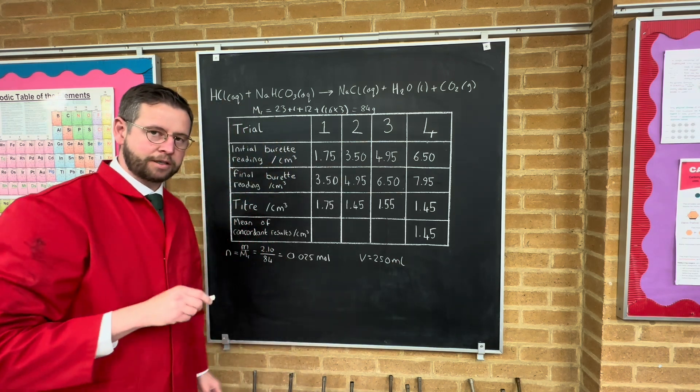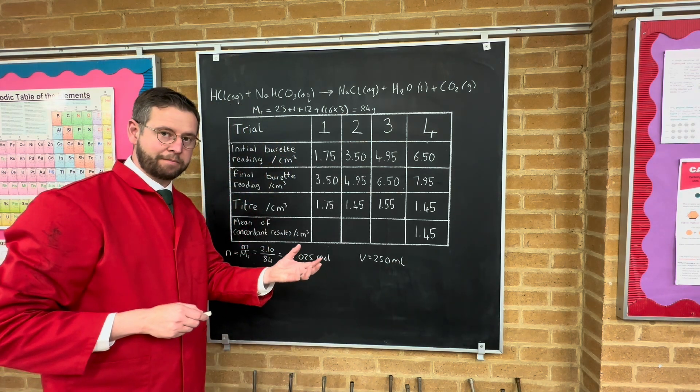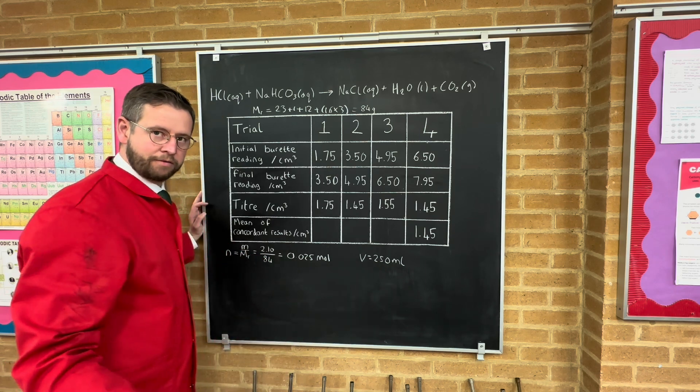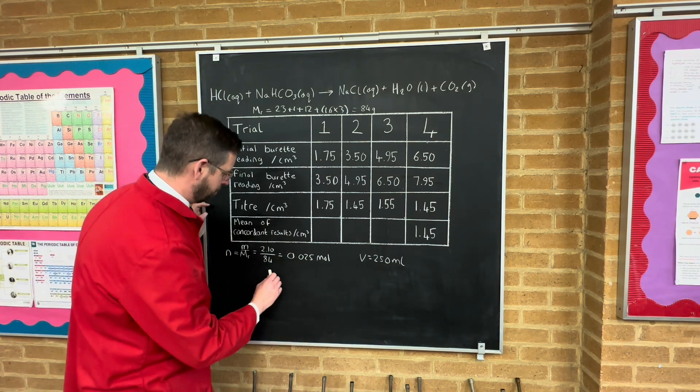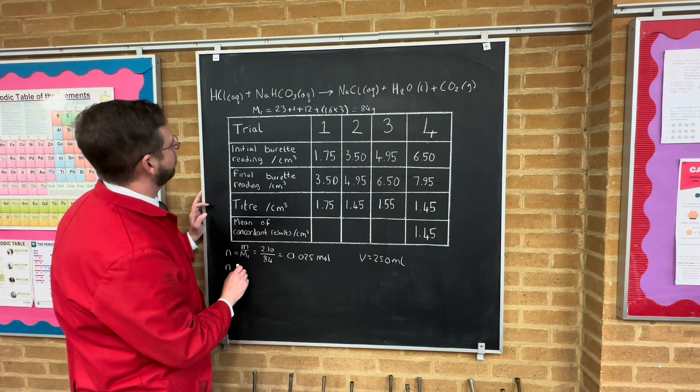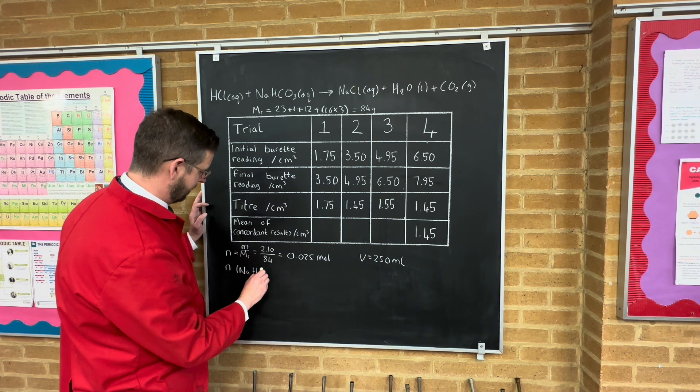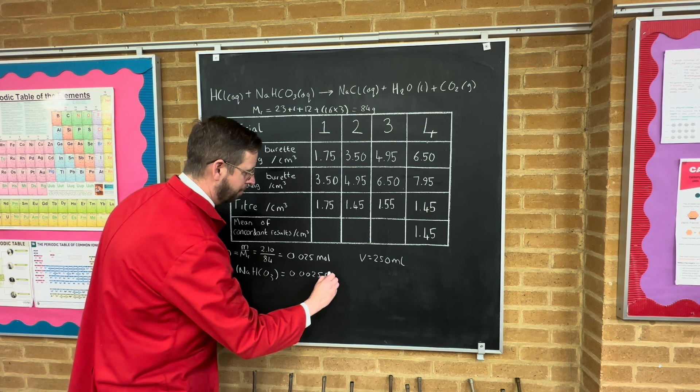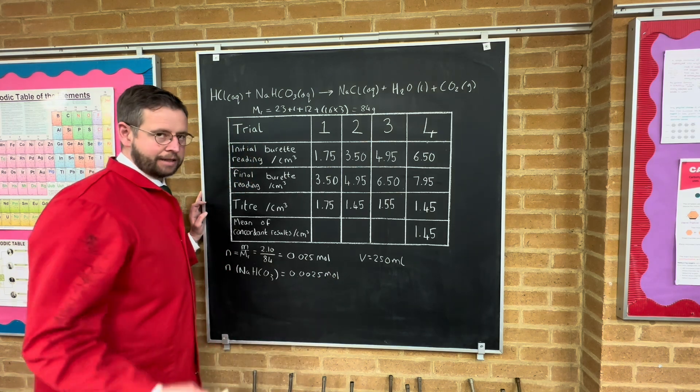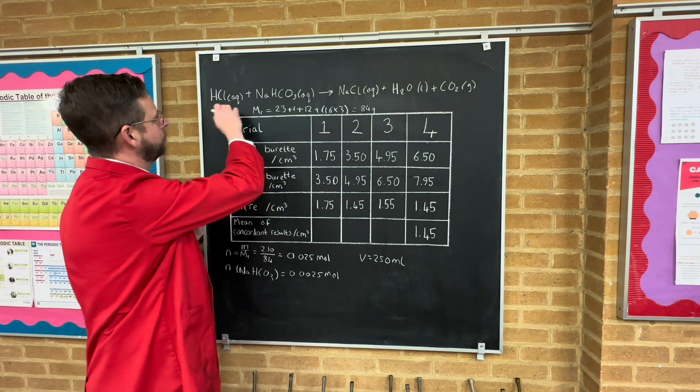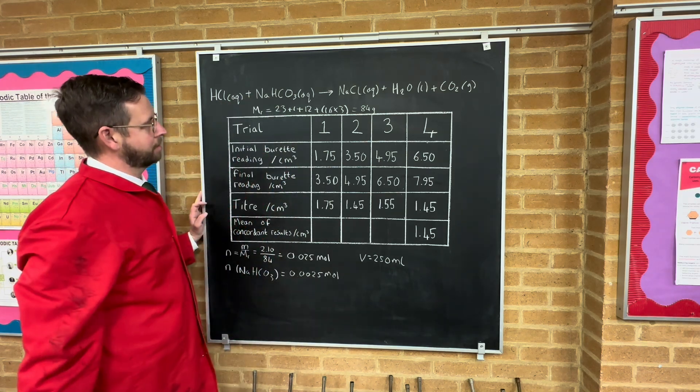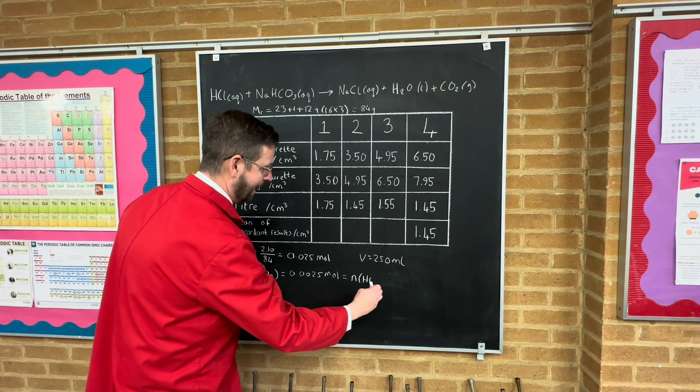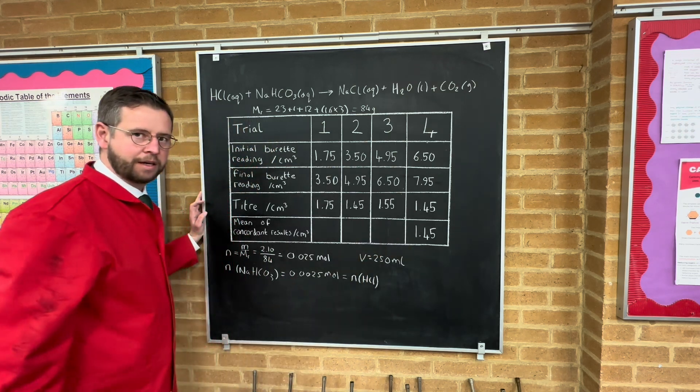But we didn't have that much as an analyte. We only had 25 mL as an analyte, which means the actual total number of moles we had was 10 times less than this because it was a volume 10 times less. So the actual number of moles of sodium hydrocarbonate, NaHCO3, was equal to 0.0025 moles. Well okay, now the next stage is we need to compare the moles ratio. It's a 1 to 1 moles ratio. One mole of that reacts and is neutralized by one mole of that, which means that this is also equal to the number of moles of HCl in our 1.45 centimeters cubed.